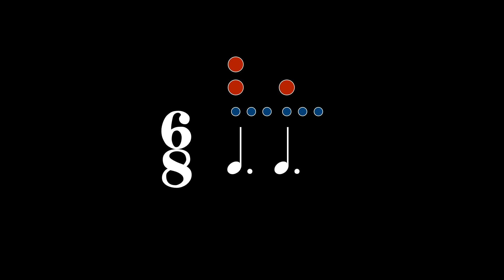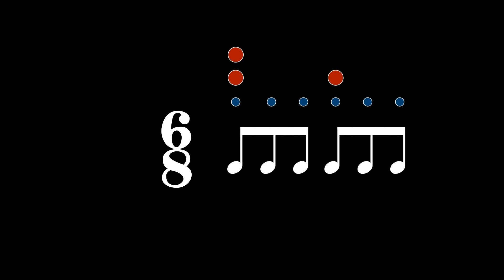So six-eight has two beats per measure, and the dotted quarter note represents the beat. The eighth note is the beat division, and there are six eighth notes per measure. Three eighth notes per beat.